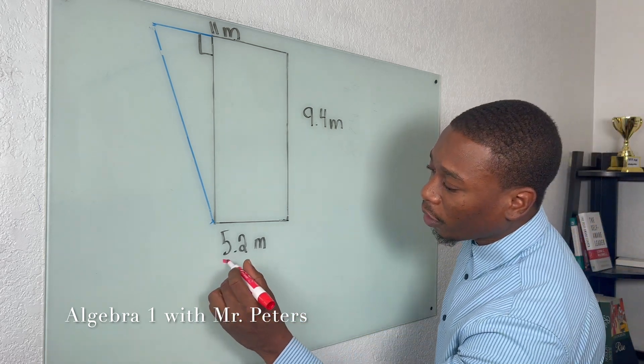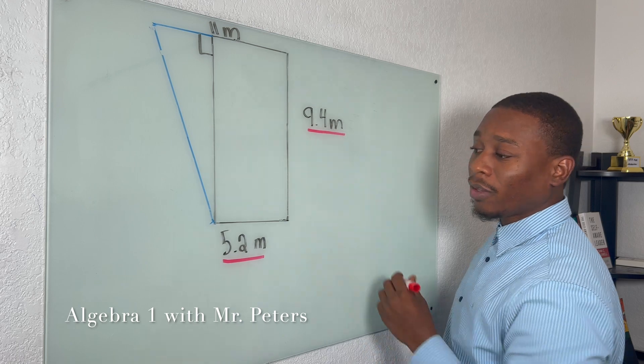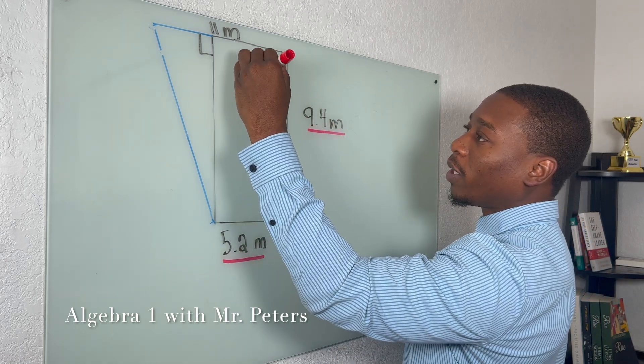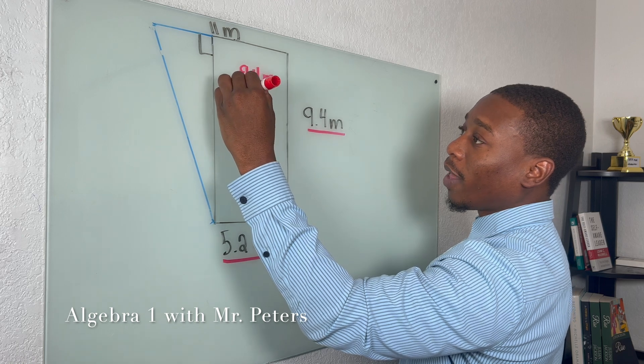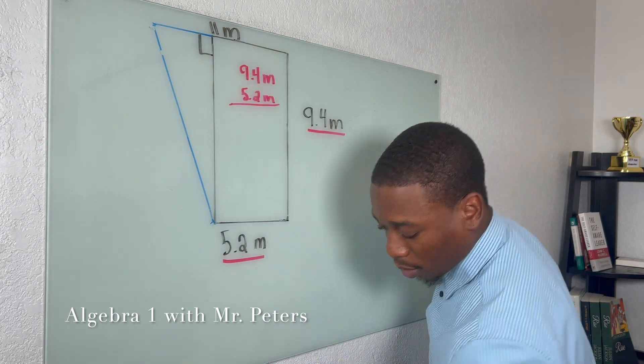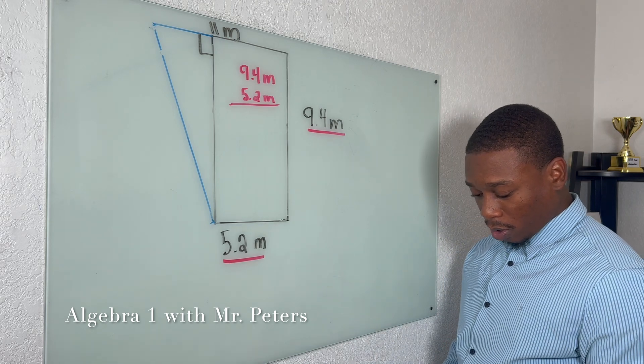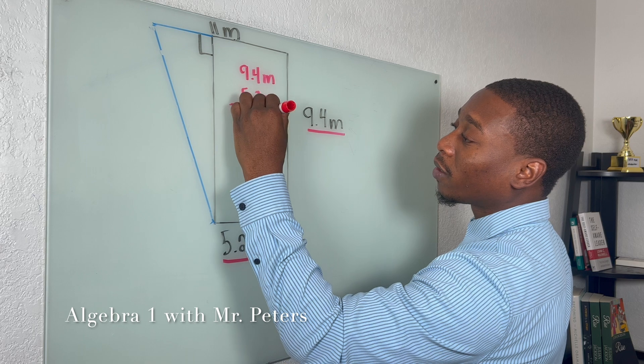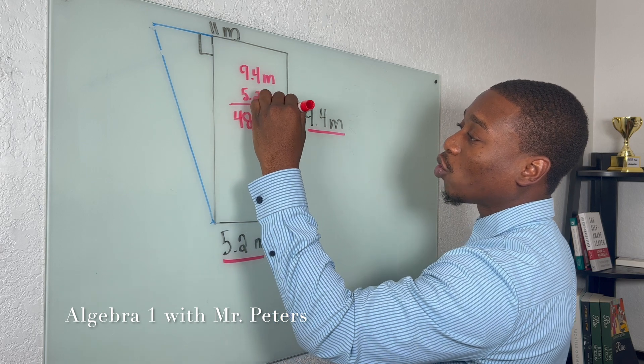So luckily for us, the area for a rectangle is just length times width. So when I take 9.4 meters and I multiply that by 5.2 meters, we should get, let's just take out the calculator real quick, 48.88 meters squared.